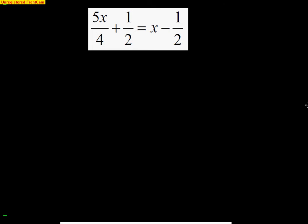The idea behind fractional equations is simple. You have a left side and a right side. If I can get both sides to be one fraction each, then it's very simple to use the cross multiplication rule. On the right-hand side, I need a common denominator between 4 and 2, which is 4. So the first term stays as 5x over 4, and I multiply the second term's numerator and denominator by 2, giving me plus 2 fourths. On the left side, I use a common denominator of 2, keeping negative 1 half and converting x to 2x over 2.